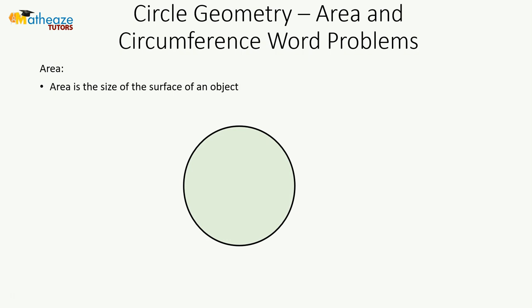The area is the size of the surface of an object, in this case a circle.